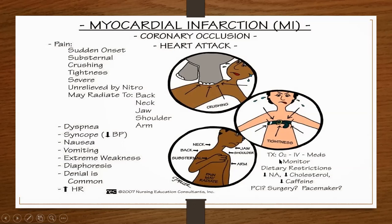Treatment for these patients usually consists of oxygen, IV medications, monitoring, dietary restrictions — lowering salt, lowering cholesterol, decreasing caffeine — and some may go on to have surgery or a pacemaker.